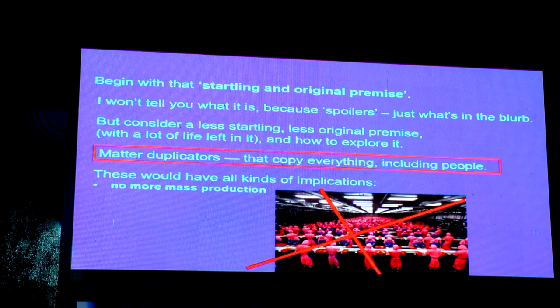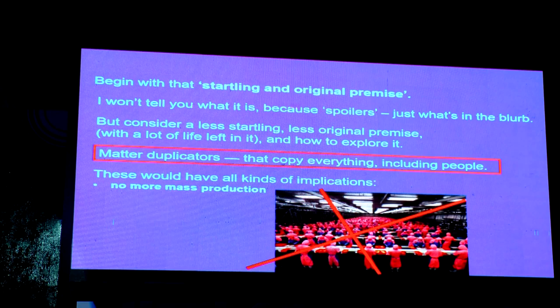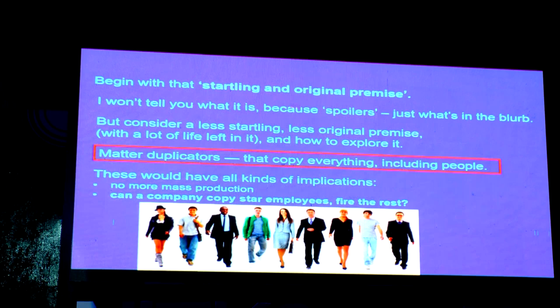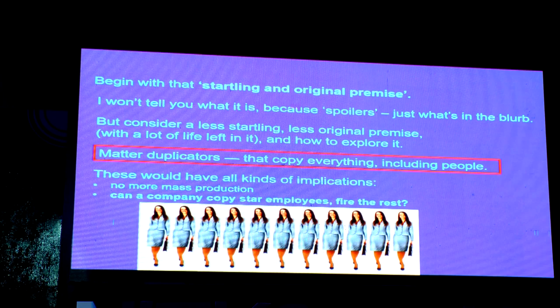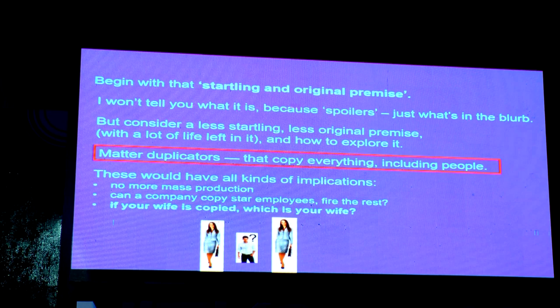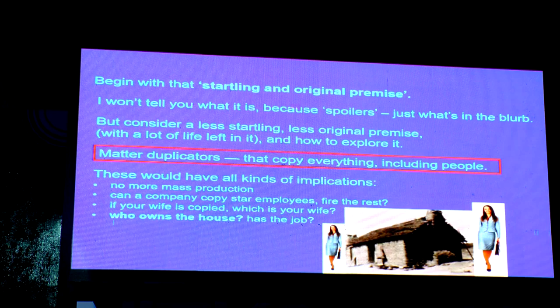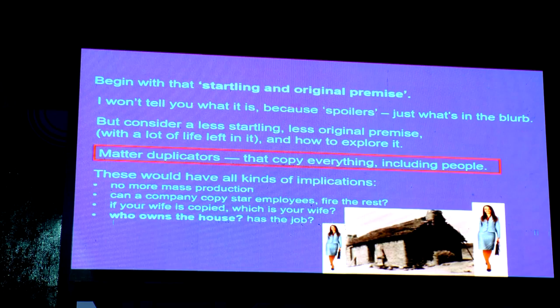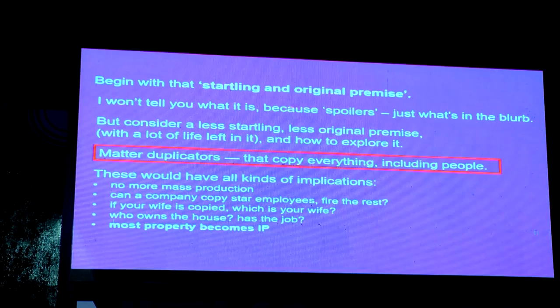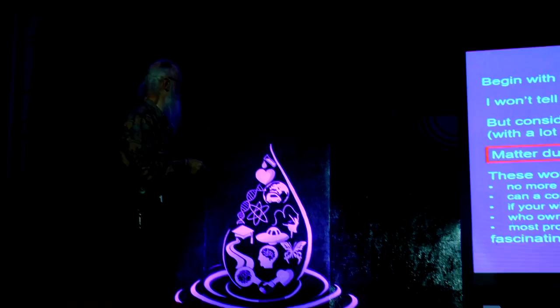No more mass production — that is the iPhone production facility. You would make one iPhone and duplicate it. Can you copy your star employees and fire the rest? If your wife is copied, or your husband, which is your wife? Who owns the house? The house is one of the few things that can't be copied, because it has land, and land can't be copied or increased. Most property, but not all, becomes intellectual property. Fascinating things to explore.